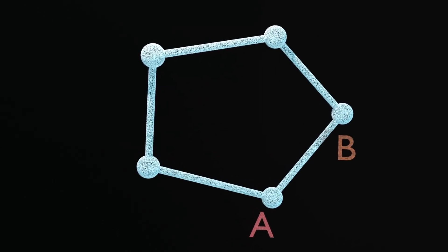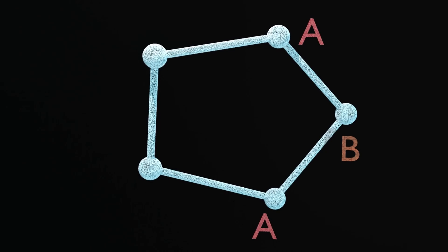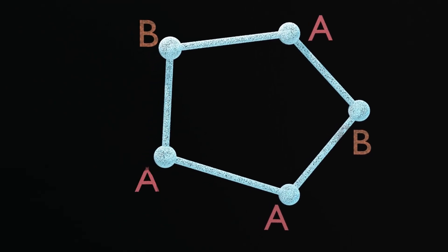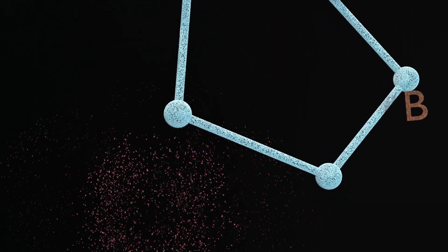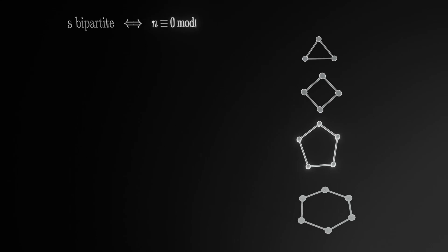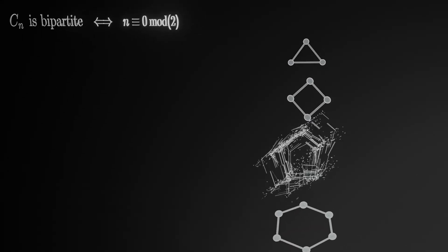etc. But because it's odd, we'll end up with an edge between two vertices in the same class. So we've shown that a cycle is bipartite if, and only if, it's an even cycle.